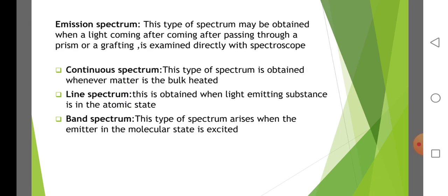Emission spectrum. This type of spectrum may be obtained when light, after passing through a prism or grating, is examined directly by a spectroscope. Continuous spectra are obtained whenever matter in bulk is heated — for example, a hot filament, hot iron, or hot charcoal. Discontinuous spectra include line spectra, obtained when the emitting substance is in the atomic state, and band spectra, which arise when the emitter is in the molecular state and is excited.